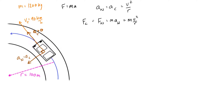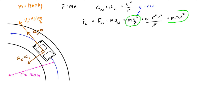Also, if you remember the expression relating tangential velocity and angular velocity — v = rω — we can substitute that in for v² to get F_n = m × r²ω² / r, which simplifies to F_n = mrω². So sometimes you'll see the centripetal force as F_n = mv²/r, and other times as F_n = mrω². I'll solve both ways for this problem to find the normal force and the normal acceleration.